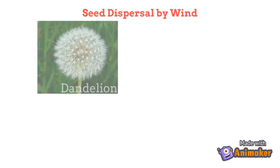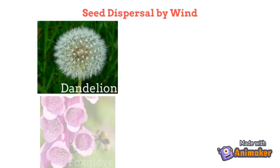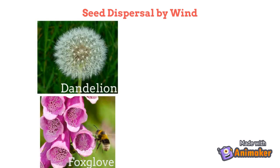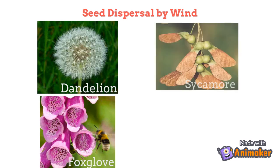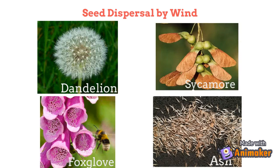Plants such as dandelions and foxgloves have fruits with parachutes of hair that catch the wind and are blown about. Sycamore and ash fruits have wings which can be blown about and carried over distances.